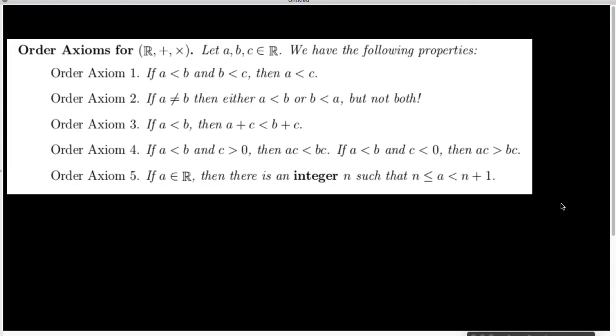So hopefully you've done that. The first thing that I want to notice is that the first order axiom is that if A is less than B and B is less than C, then A is less than C.